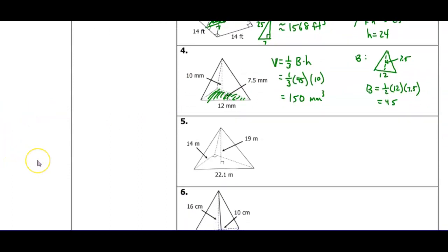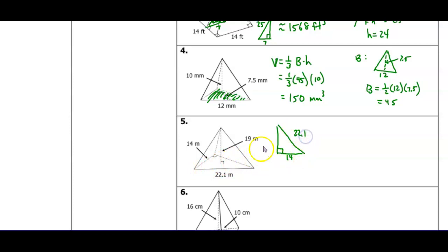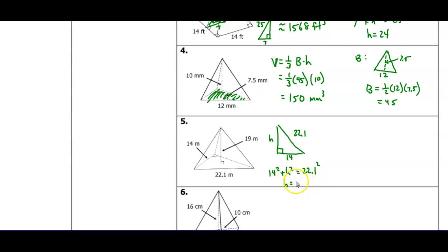In exercise five, the right angle indicates the base is a right triangle. Drawing that triangle separately, one leg is 14 and the hypotenuse is 22.1. To find the missing leg — the height of the triangle — I use the Pythagorean theorem: 14 squared plus h squared equals 22.1 squared. Squaring both, subtracting, and taking the square root gives h equals 17.1.